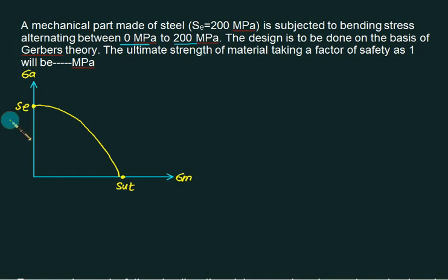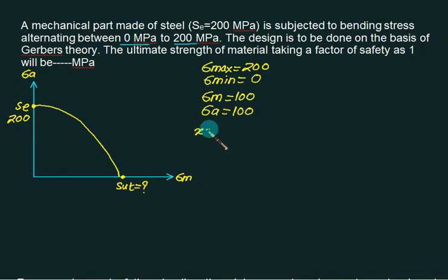First of all, what is SE? SE is 200. You want to calculate the value of SUT. Factor of safety was given as 1. Sigma max is equal to 200. Sigma minimum value is equal to 0. From this we can calculate Sigma mean: max plus min divided by 2. Then we can calculate amplitude: max minus min divided by 2. Now you have to first prefer to write X term. Your X term is Sigma M by SUT. Then you have to write Y term as Sigma A divided by SE. And don't forget to multiply by FOS.